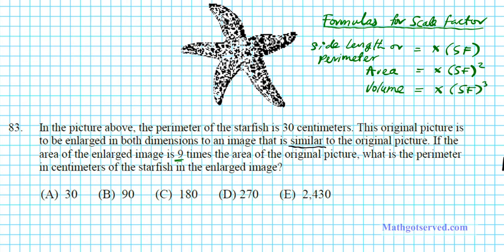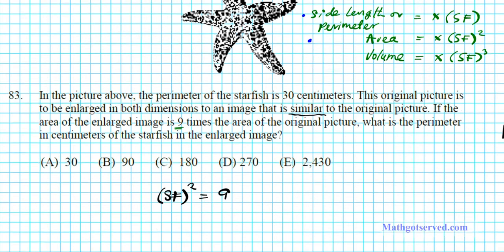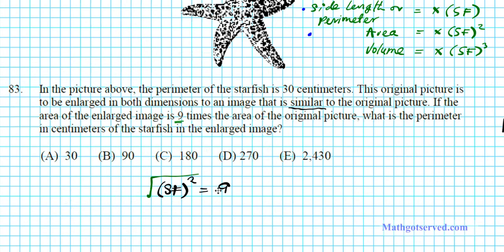In this problem we're going to be making use of formulas one and two — the first and second formula. Since the area of the enlarged image is nine times the area of the original picture, that automatically tells me that the scale factor squared is equal to nine. That is what you multiply the areas by to preserve the similarity relationship. If the scale factor squared is nine, then the scale factor has to be the square root of nine, which is three.